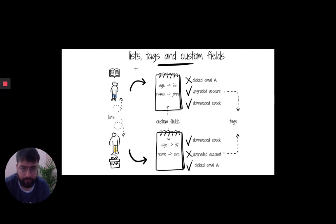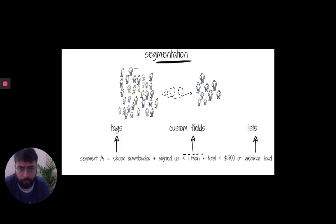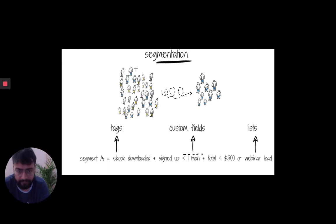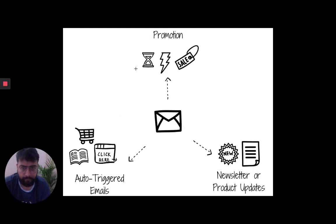Based on their behavior, you can start grouping your audience based on the tags they have, based on the custom data or custom fields they have. Some of your users may be from the US West Coast, others may be from Europe. Their genders may differ, the product categories they are interested in may differ, the dollar value they have paid you may differ. Based on all this information, you can create hyper-targeted segments of this audience — for example, people who downloaded your e-book, signed up in the last one month, and have paid at least $500.